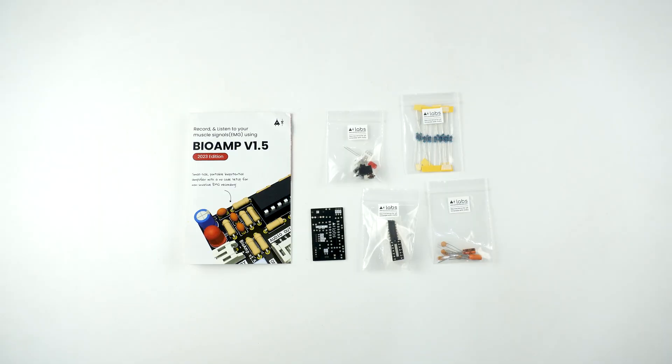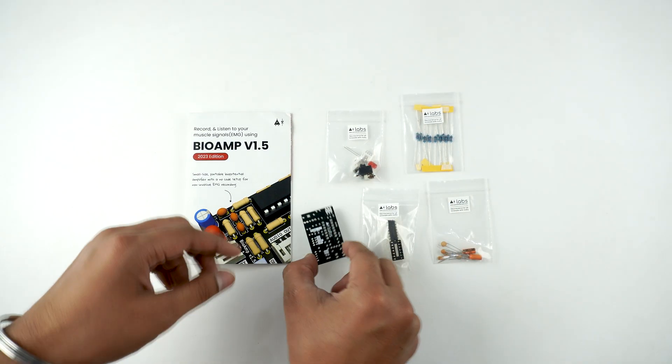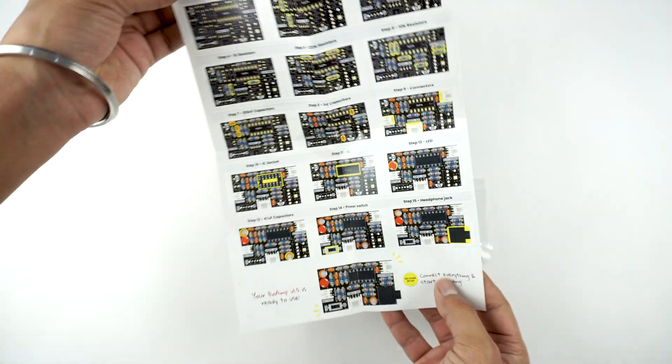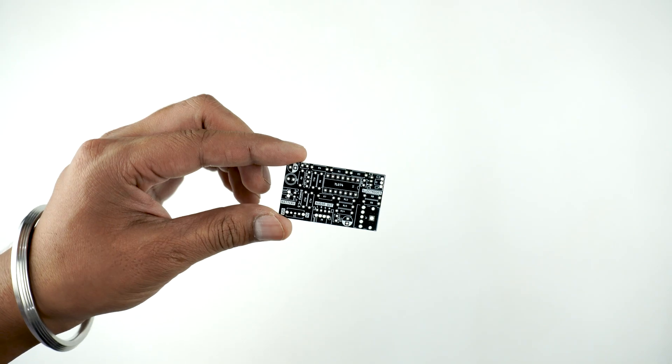First of all, you'll have to solder all the components on the PCB as per this guide. Once everything is soldered, the board will look like this.